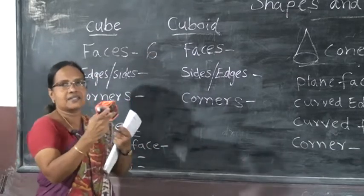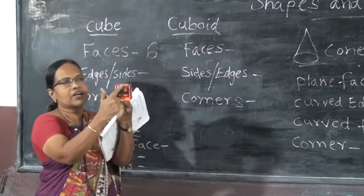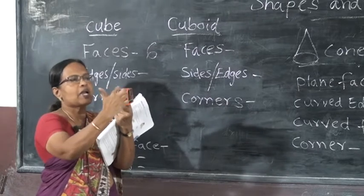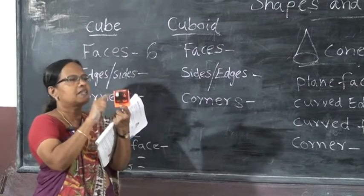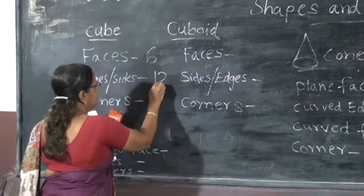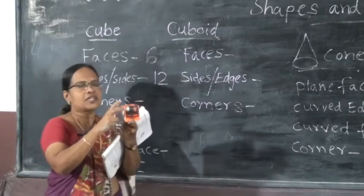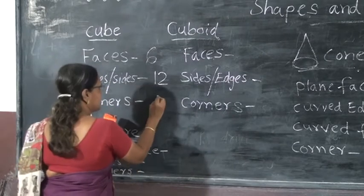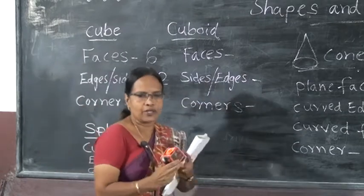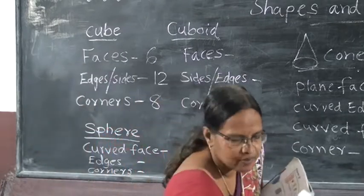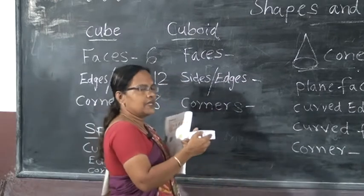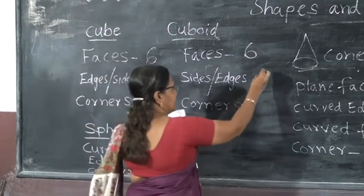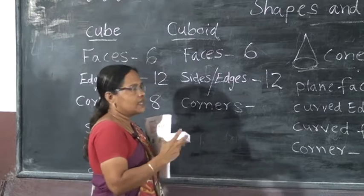Then, how many edges? Edges. Cuboid — cuboid. How many faces? Six faces. How many edges? Twelve edges. Then how many corners? Eight corners. Clear, children.